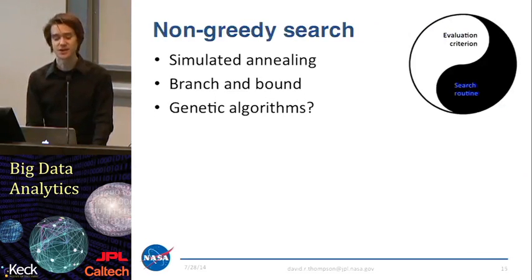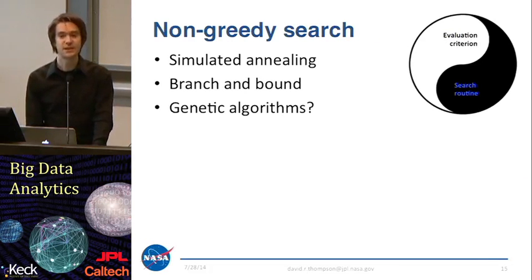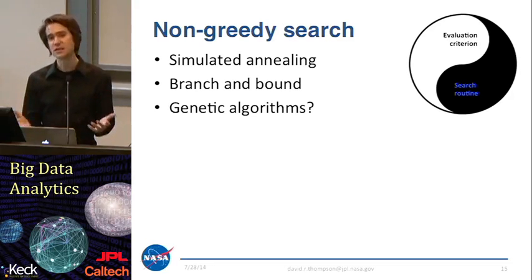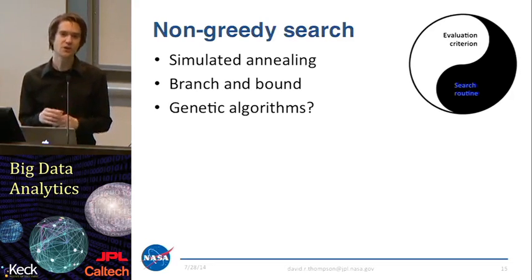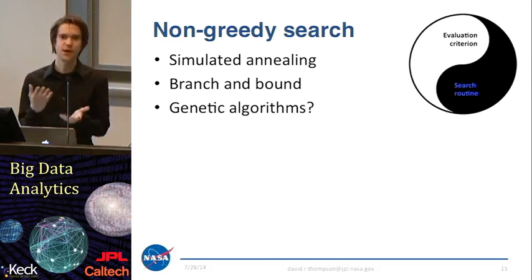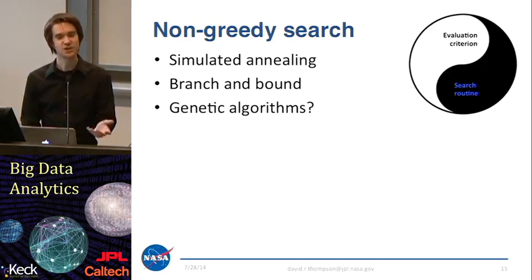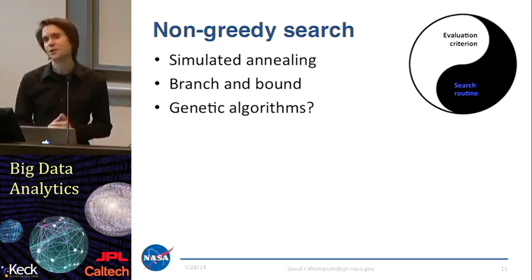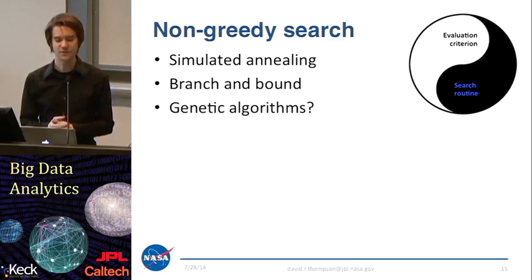I also want to briefly touch on some options for non-greedy search. People have proposed simulated annealing approaches — a stochastic search where you search randomly throughout the data set and perturb your candidate list according to some temperature term that decreases over time. Early on you're searching wildly through differing candidate sets of attributes, and as the temperature reduces, you settle into a local maximum with a good combination of features. People have also proposed branch and bound search algorithms as well as genetic algorithms for feature selection. More generally, any non-convex combinatorial optimization engine is a candidate for a feature selection algorithm.